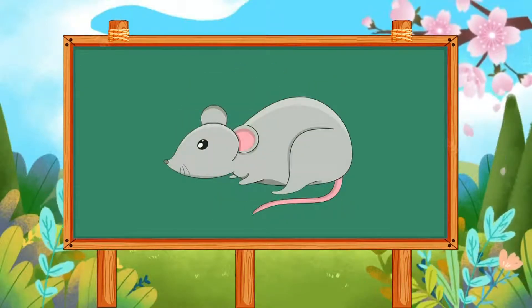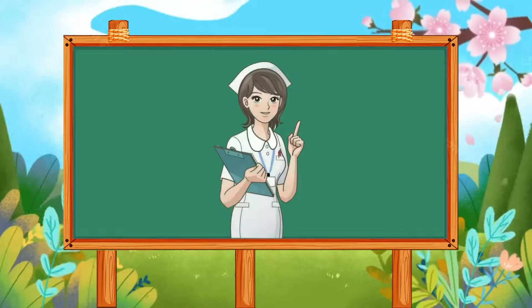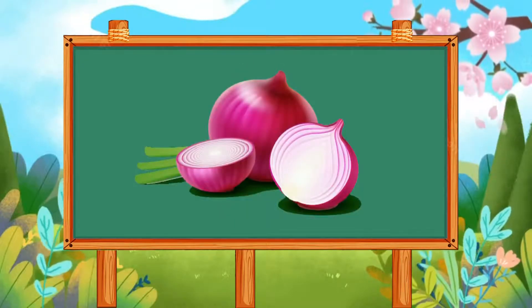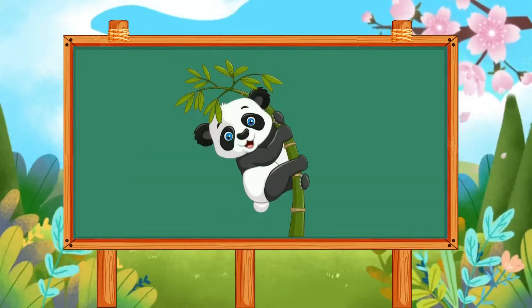M is for mouse. N is for nurse. O is for onion. P is for panda.